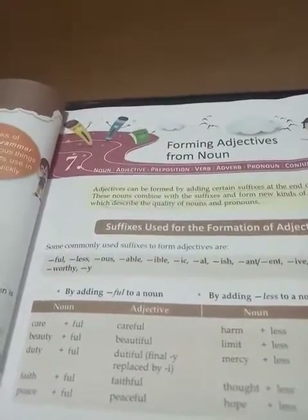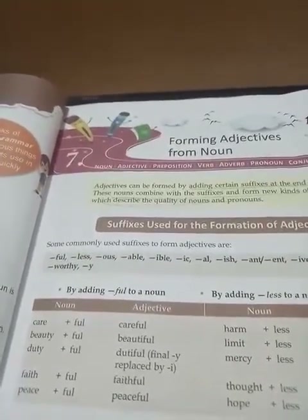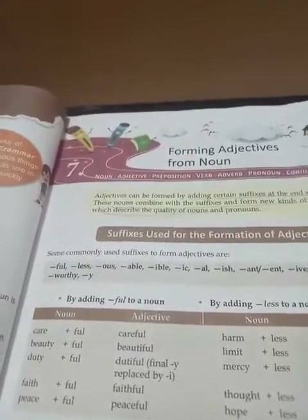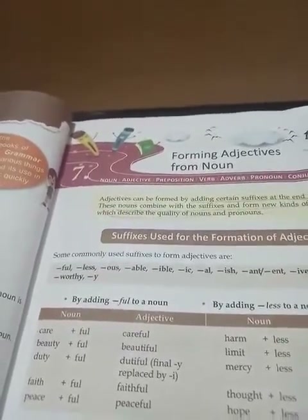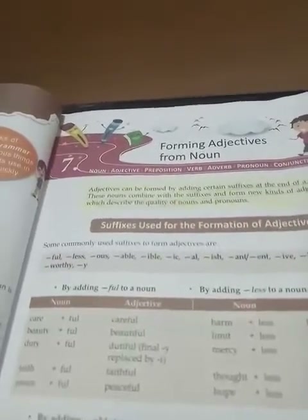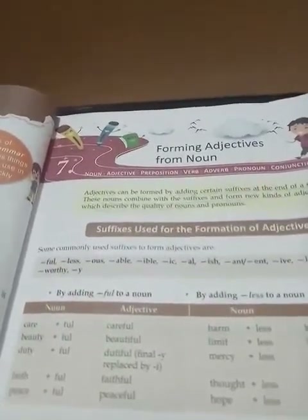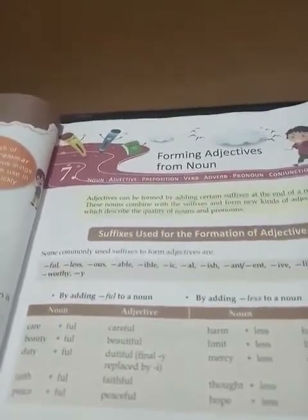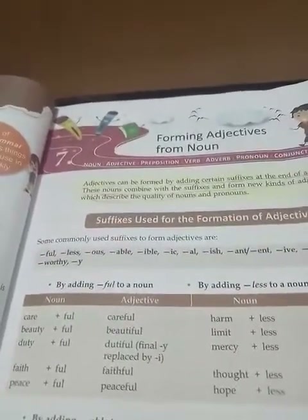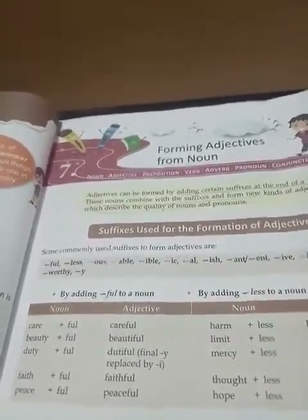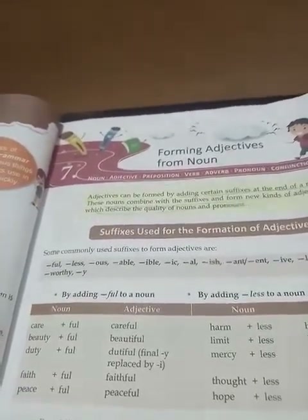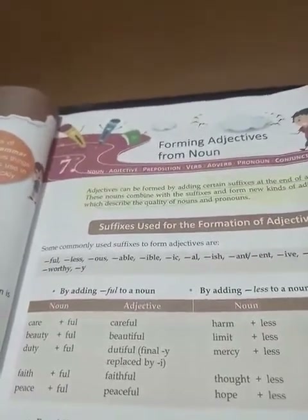Here we are going to form adjectives from nouns by adding different suffixes. Some commonly used suffixes for the formation of adjectives are: FUL, LESS, OUS, ABLE, IBLE, IC, AL.